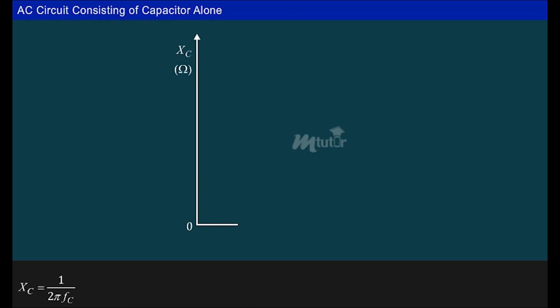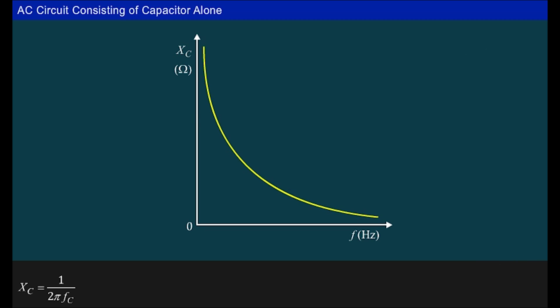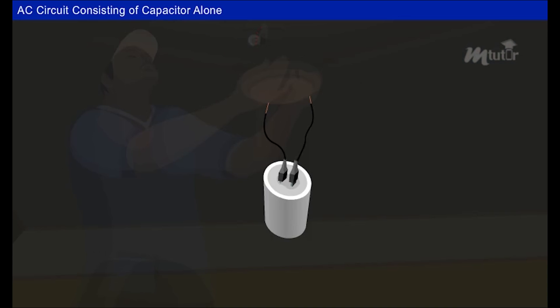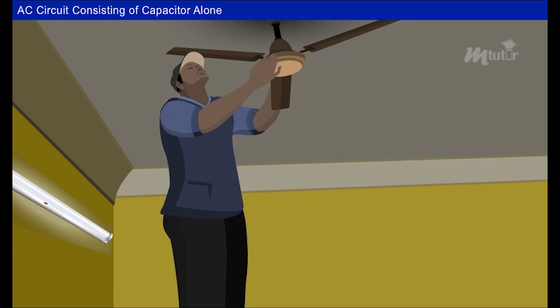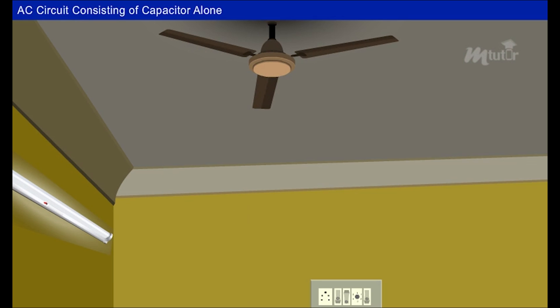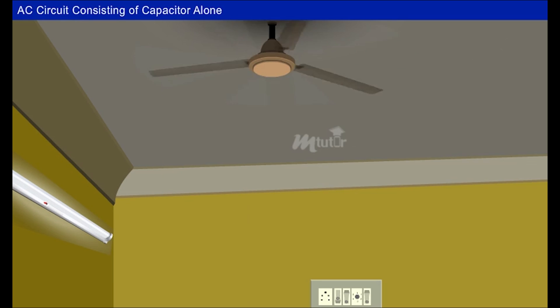The relation between capacitive reactance Xc and frequency f can be explained by plotting a graph of Xc vs. f, which gives an exponentially decaying curve. The capacitor takes time to charge and discharge, and this phenomenon plays a vital role in ceiling fan operation.